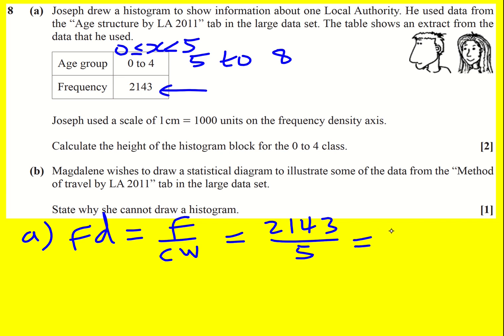Once you work this out with the calculator you'll get 428.6, and then that's in units, or units per year I suppose. But whatever the units are, we need to convert it into centimeters so it's going to be 428.6 divided by a thousand.